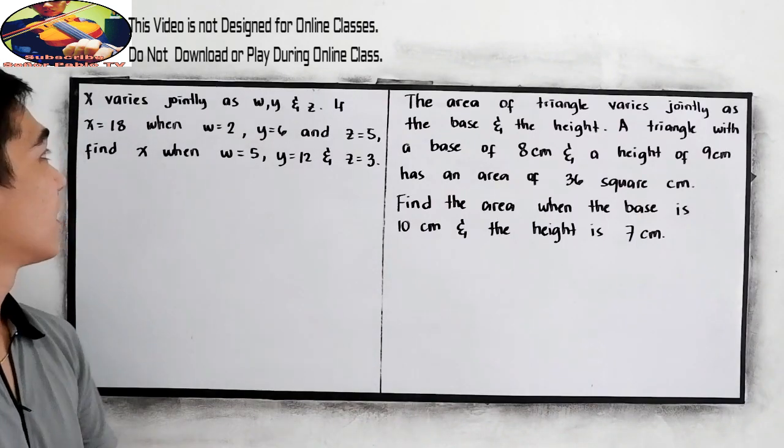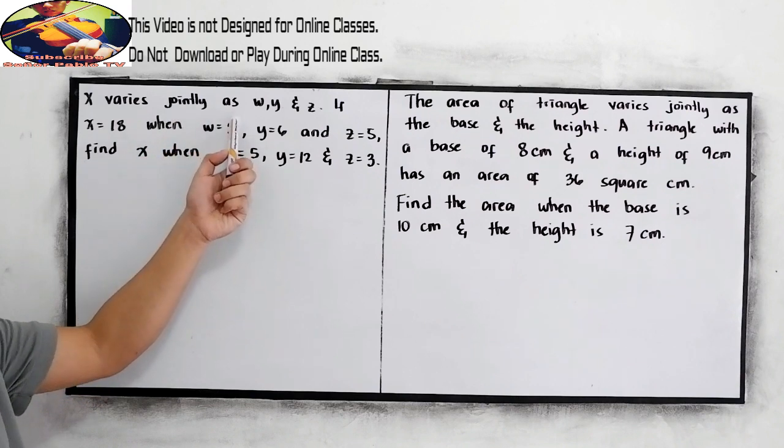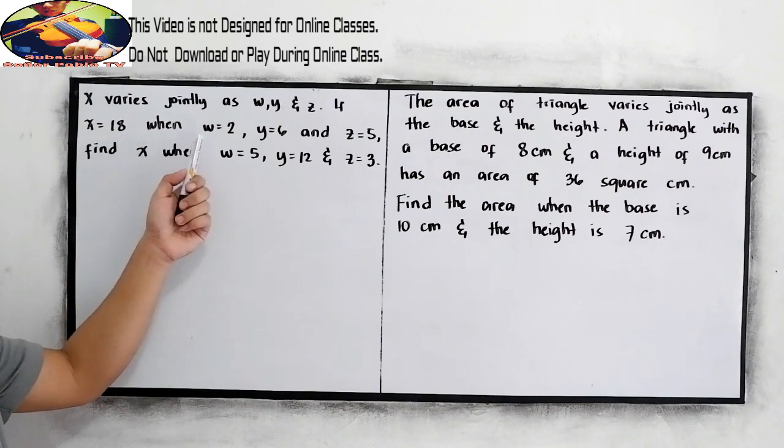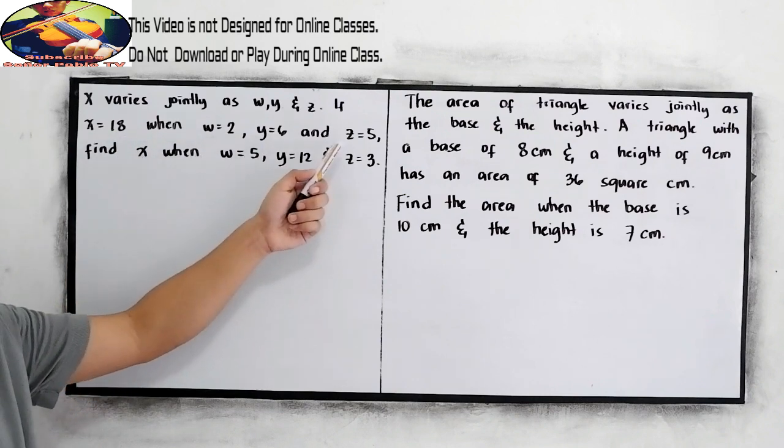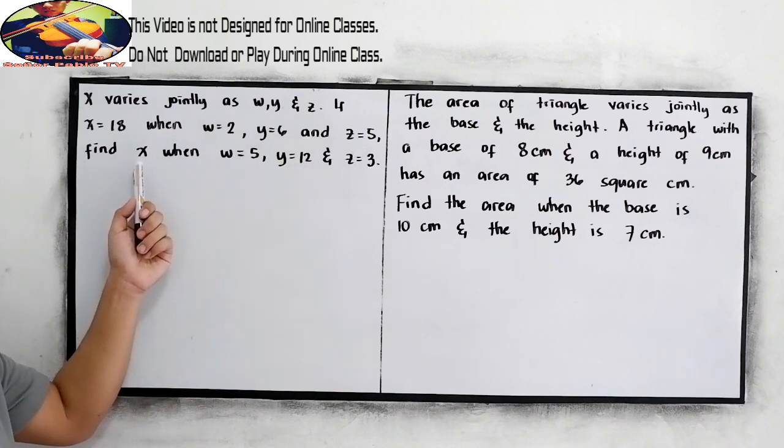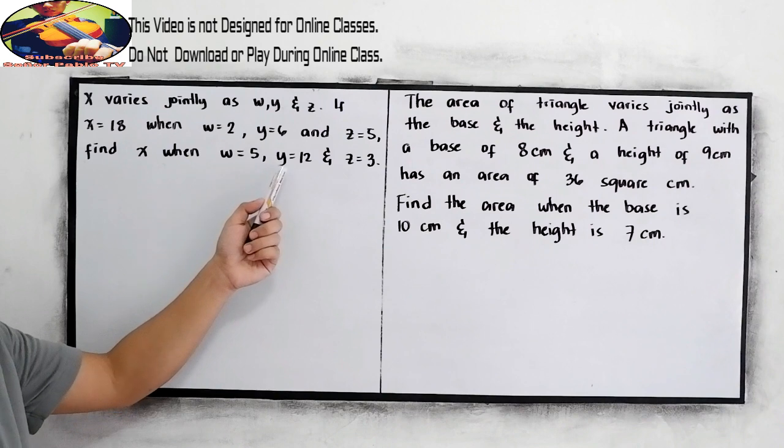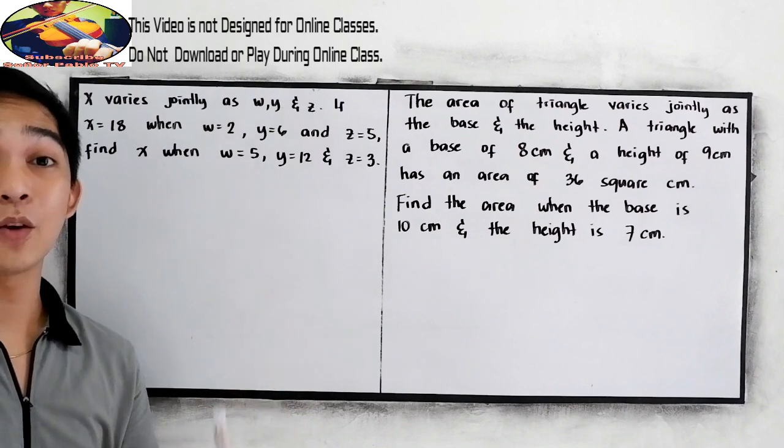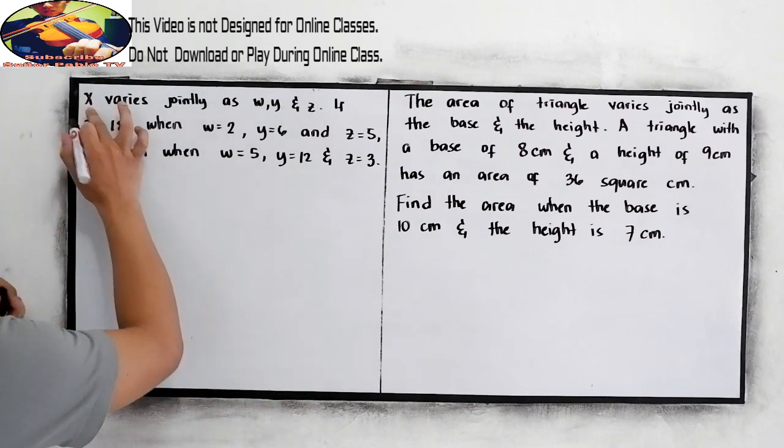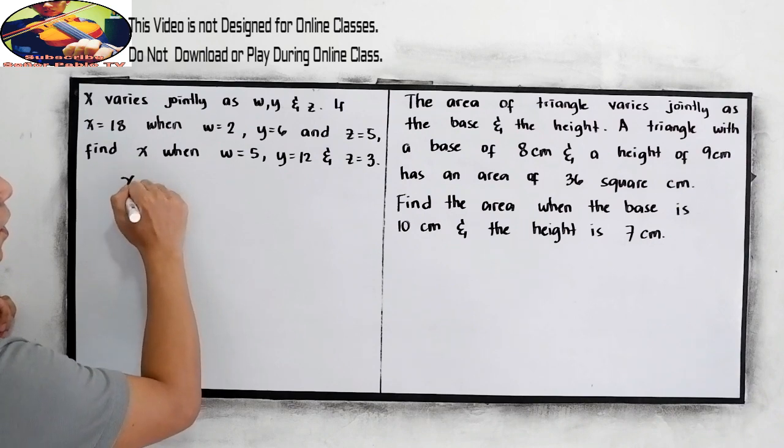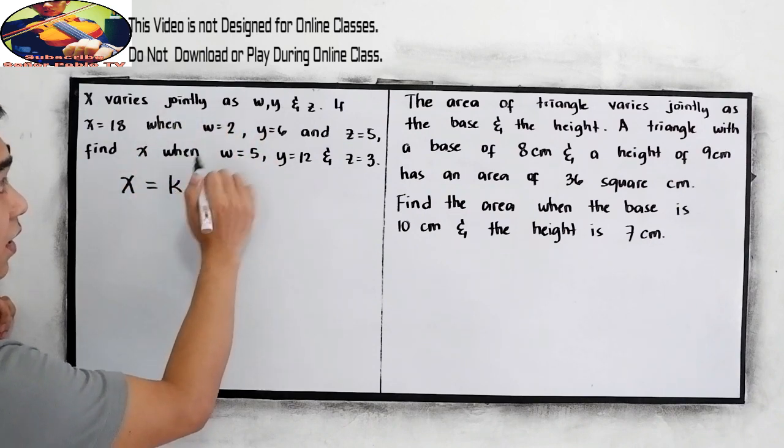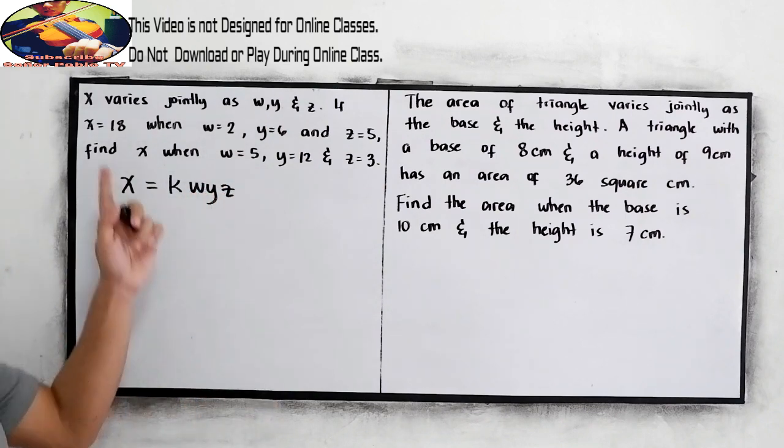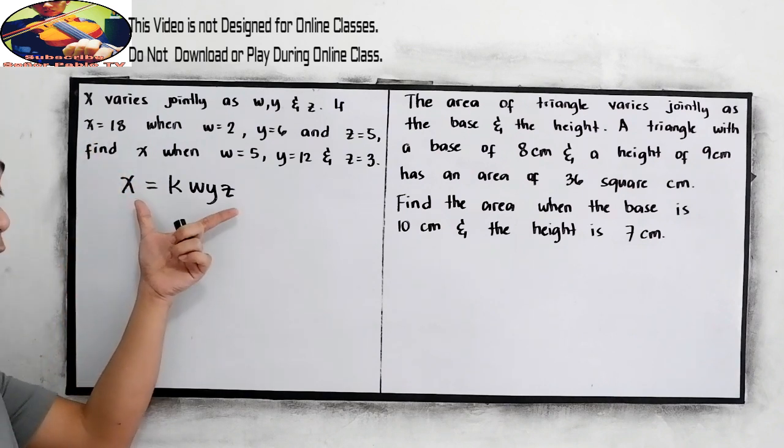Now let's have the following examples. x varies jointly as w, y, and z. If x is equal to 18 when w is equal to 2, y is equal to 6, and z is equal to 5, find x when w is equal to 5, y is equal to 12, and z is equal to 3. Let's first find the equation of our variation. x varies jointly as w, y, and z.